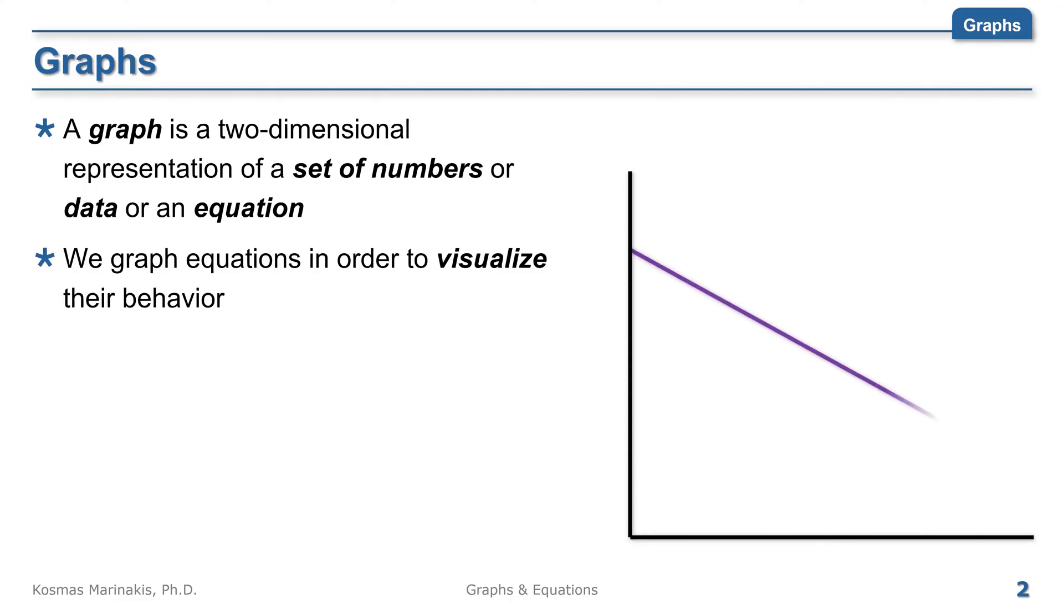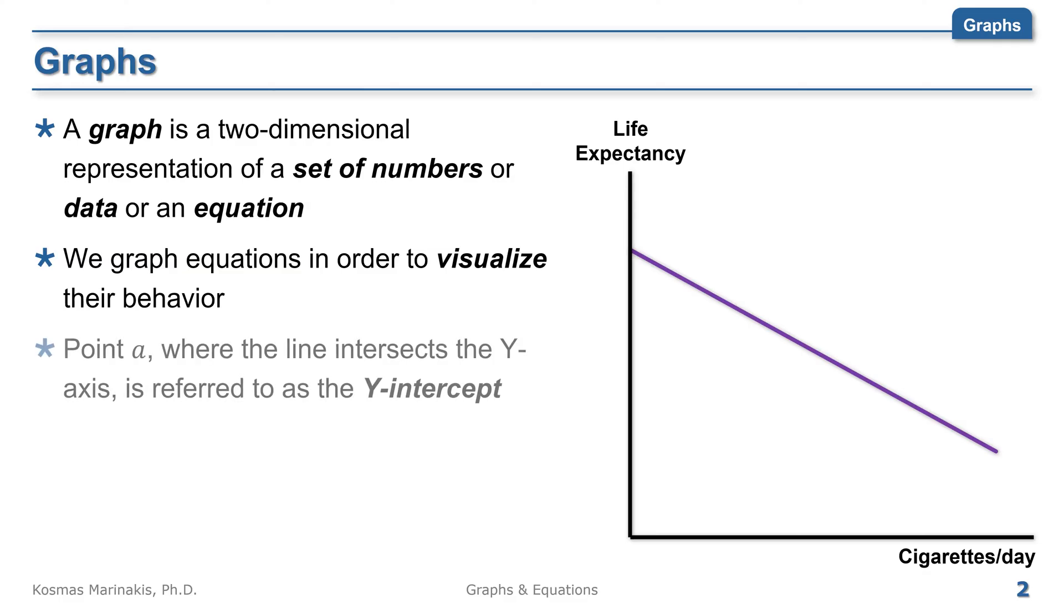This graph, for example, may represent the relationship between life expectancy and smoking, and it's a nice way of explaining to someone why it's not smart to smoke cigarettes. Point A is where the line intersects the vertical axis, and we refer to it as the y-intercept, the vertical intercept, or more usually, just the intercept.